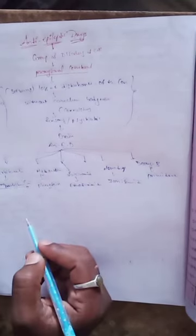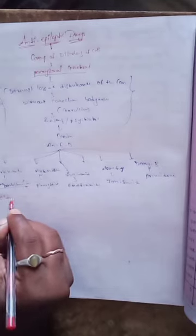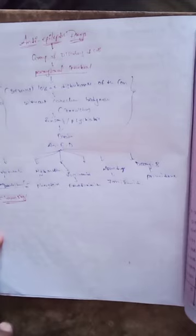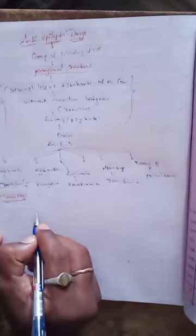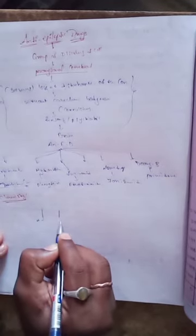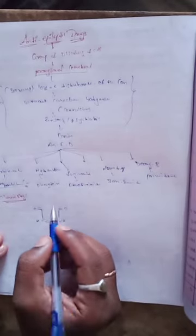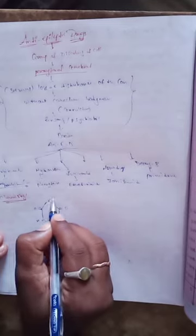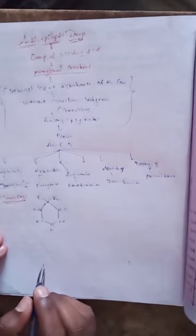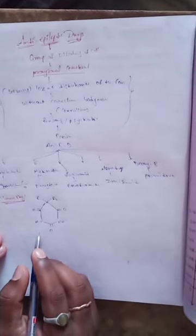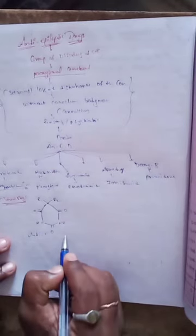Now we discuss about phenobarbitone. What is the chemistry of barbiturates? Chemically, barbiturates contain a six-membered ring with three ketone groups. These are also used as anti-convulsants because convulsions also occur in epilepsy.